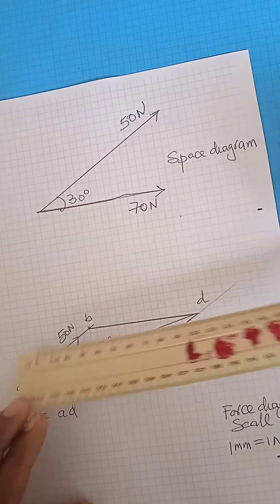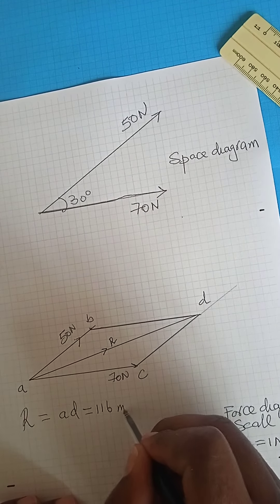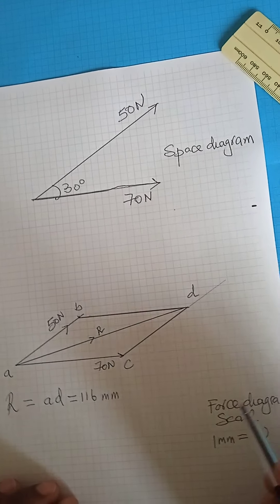There is my AD. I get 116 millimeters. And then according to the scale that I've been using, 116 will be equal to 116 Newtons.